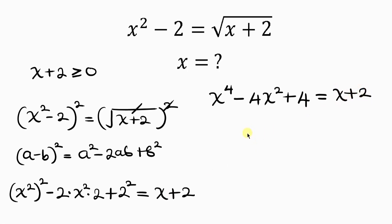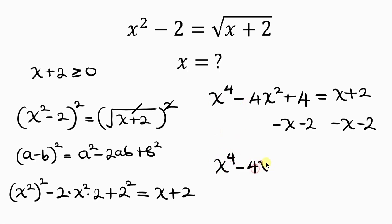Our next step will be to subtract x from both sides, and also subtract 2 from both sides. So we have x to the 4th minus 4x squared, then minus x, and 4 minus 2 is plus 2. And on the right-hand side, x minus x is 0 and 2 minus 2 is 0, so we have 0 on the right-hand side.